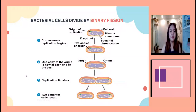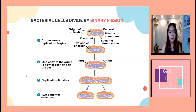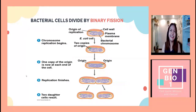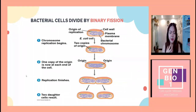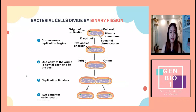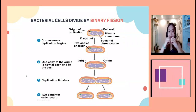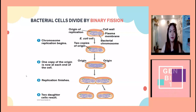Bacterial cells divide by binary fission. What happens is the chromosome replication begins — similar to the S phase in eukaryotes. The genetic material is replicated and once you have two copies of the original genetic material, the cytoplasm of the bacterial cell divides. Now you have two daughter bacterial cells.